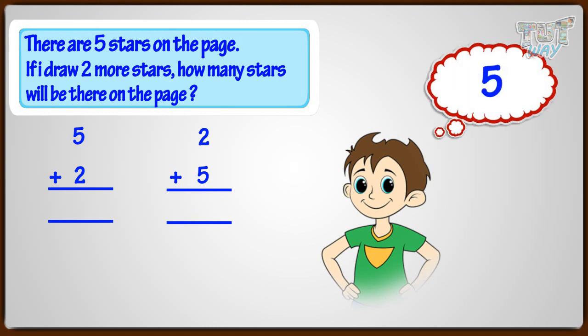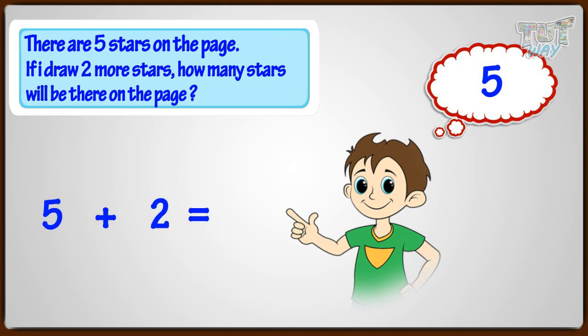And count up two. Six, seven. Five plus two equals seven.